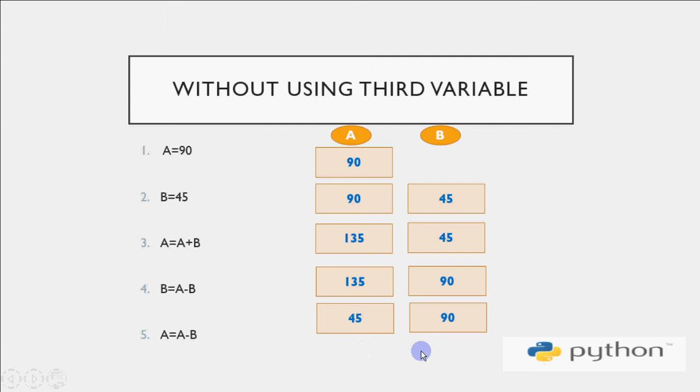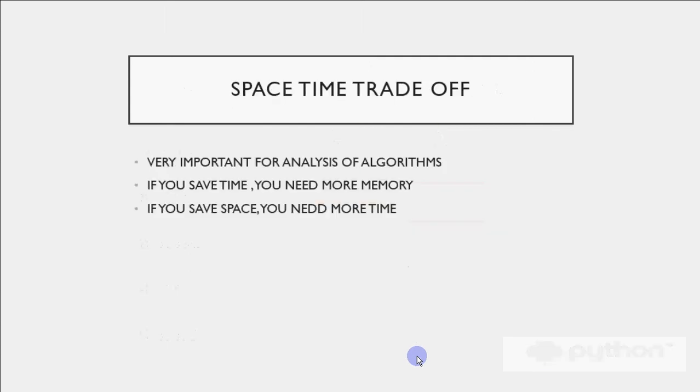The concept, the logic is same, whichever language you're coding in, whether it's Python, whether it's Java, C sharp, wherever. So wherever you do it, you have the same logic for swapping two variables. And as we discussed these techniques, these techniques are a very good example to understand the concept of space time tradeoff.